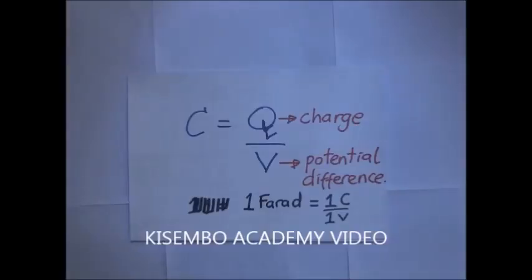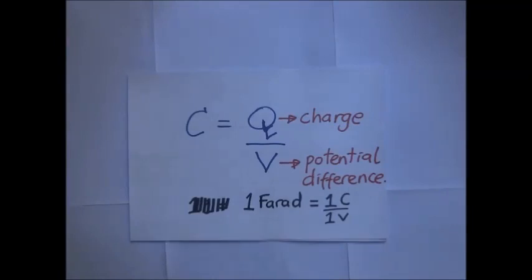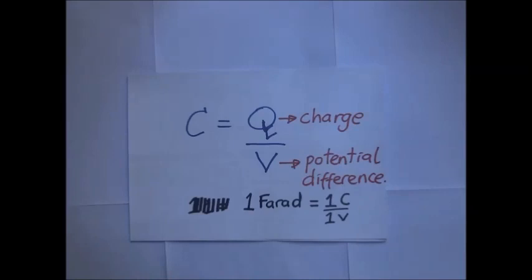In our previous tutorial we introduced the capacitor as a temporary energy storage device. The measure of its ability to store a charge is what we shall refer to as capacitance, and that's what we shall discuss in this tutorial along with other factors affecting capacitance. The capacitor has the capacity to store energy in the form of an electric charge, thereby producing a potential difference across its plates. You can think of a capacitor as more like a small rechargeable battery.